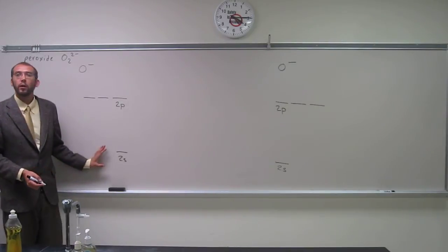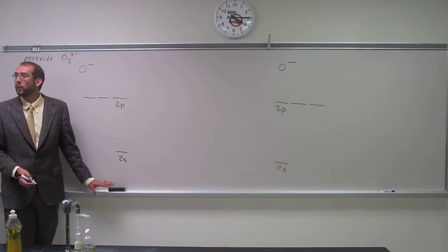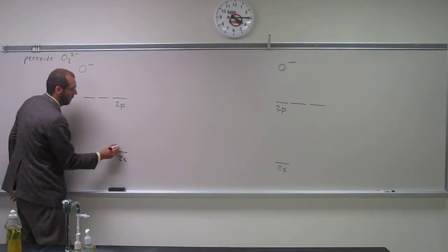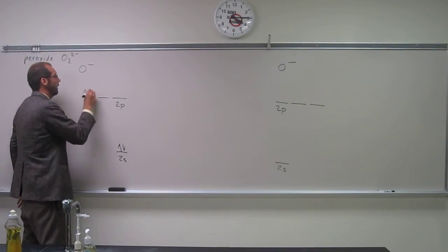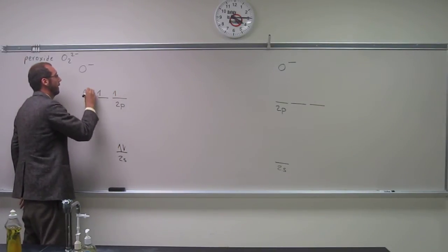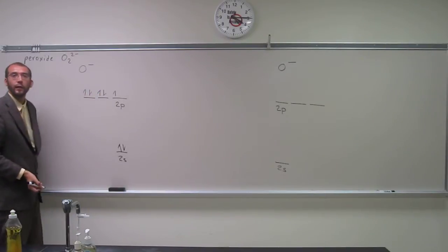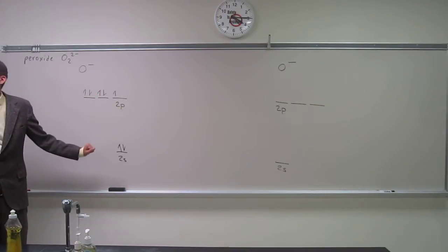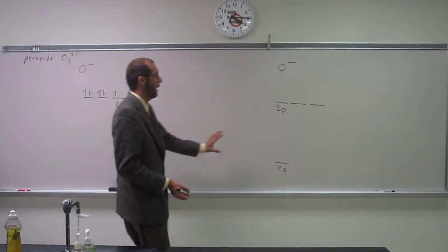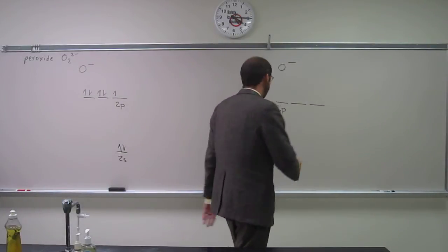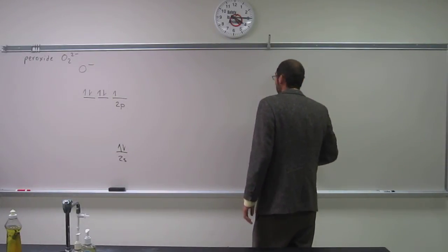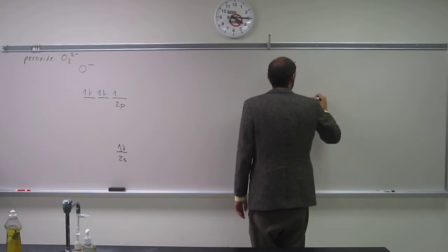Remember all your orbital filling rules. So one, two, three, four, five, six, seven. And then we're going to have the exact same thing over here. One, two, three, four, five, six, seven.